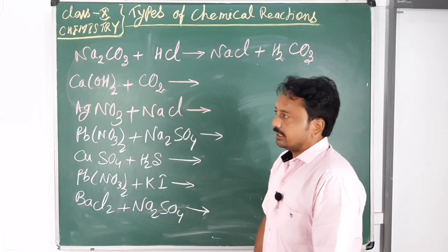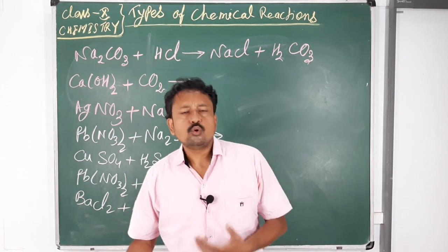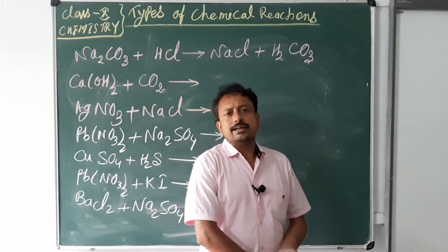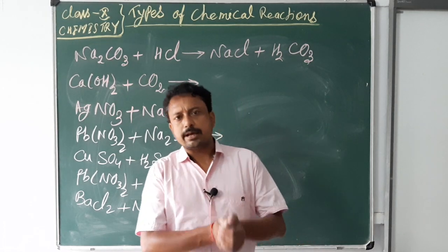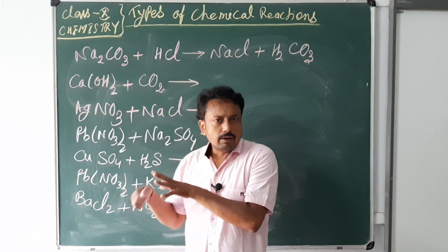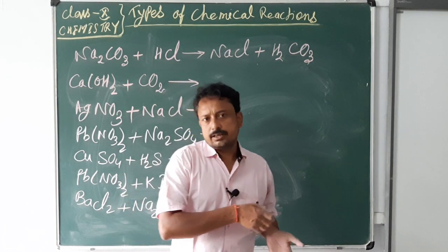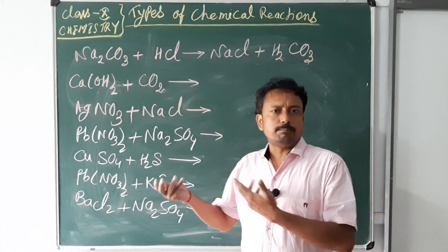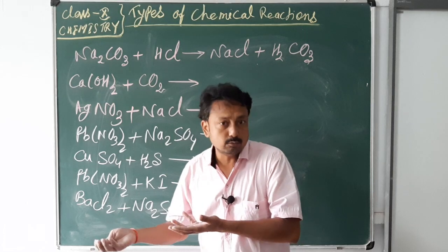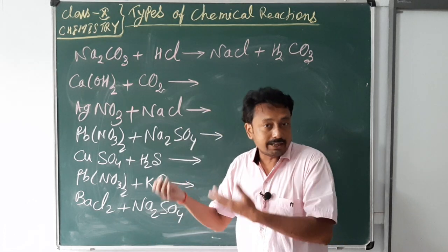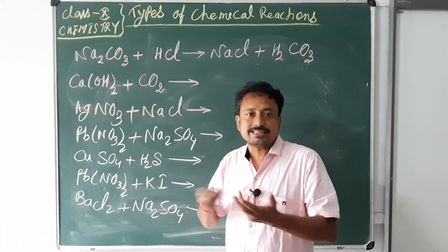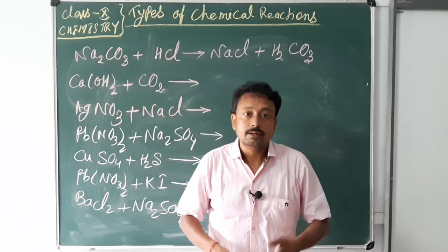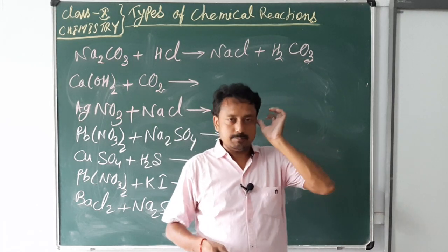In double displacement reactions, two complexes interchange their groups or radicals. We can say that double displacement reactions are those chemical reactions in which two different complexes interchange their ions, or two different compounds interchange their partners. If two reactants are exchanging their partners and two new products are forming, those reactions are called double displacement reactions.